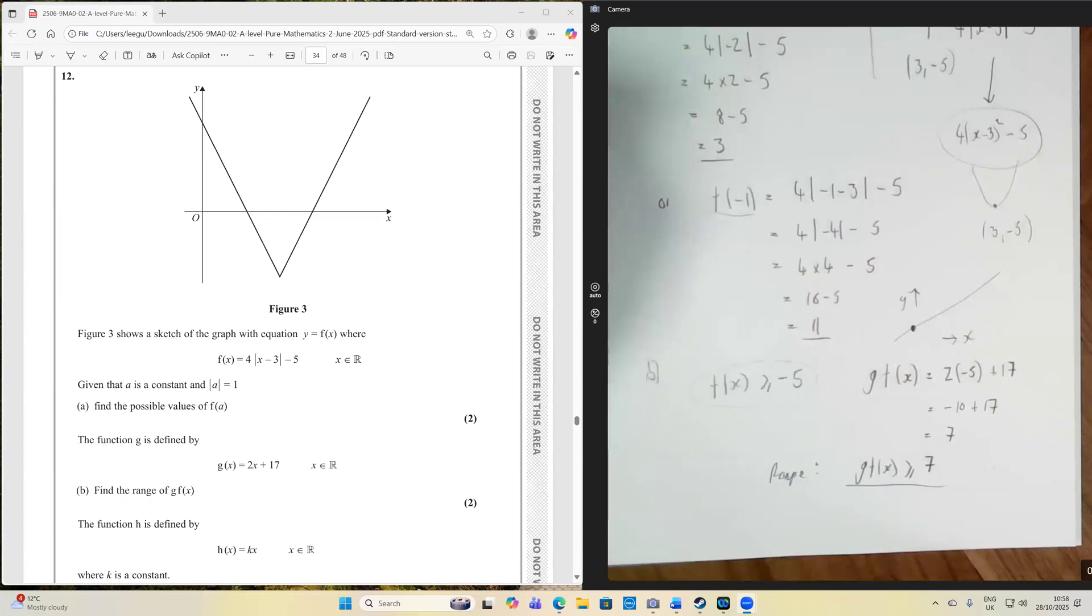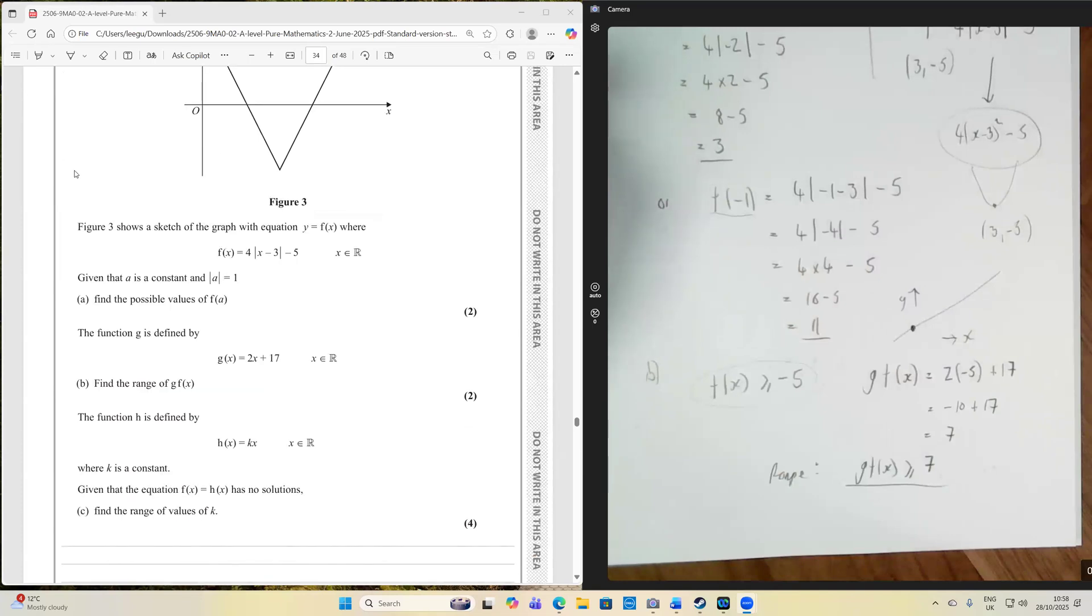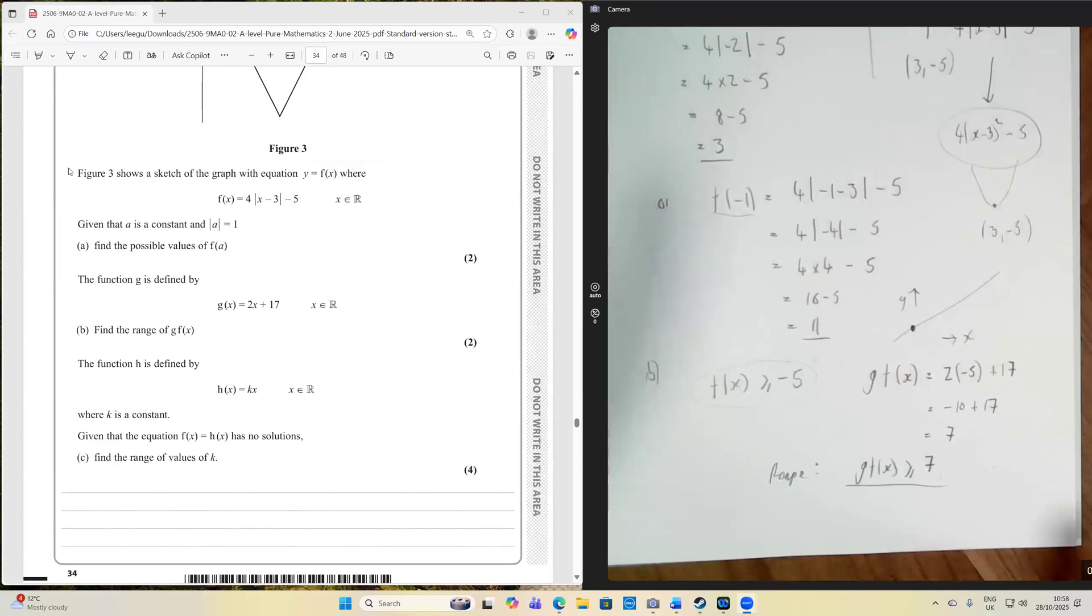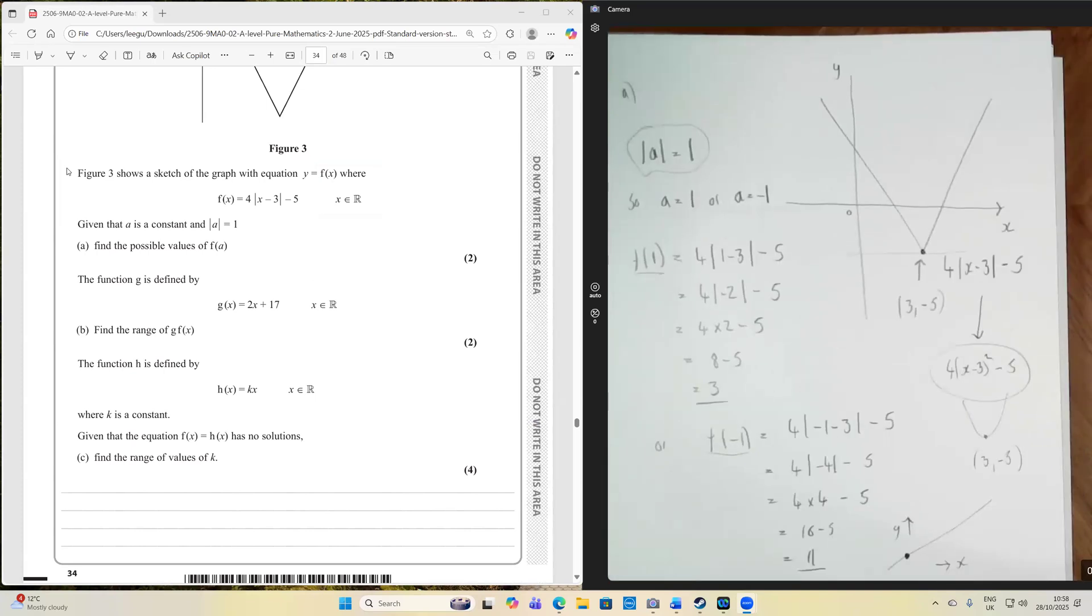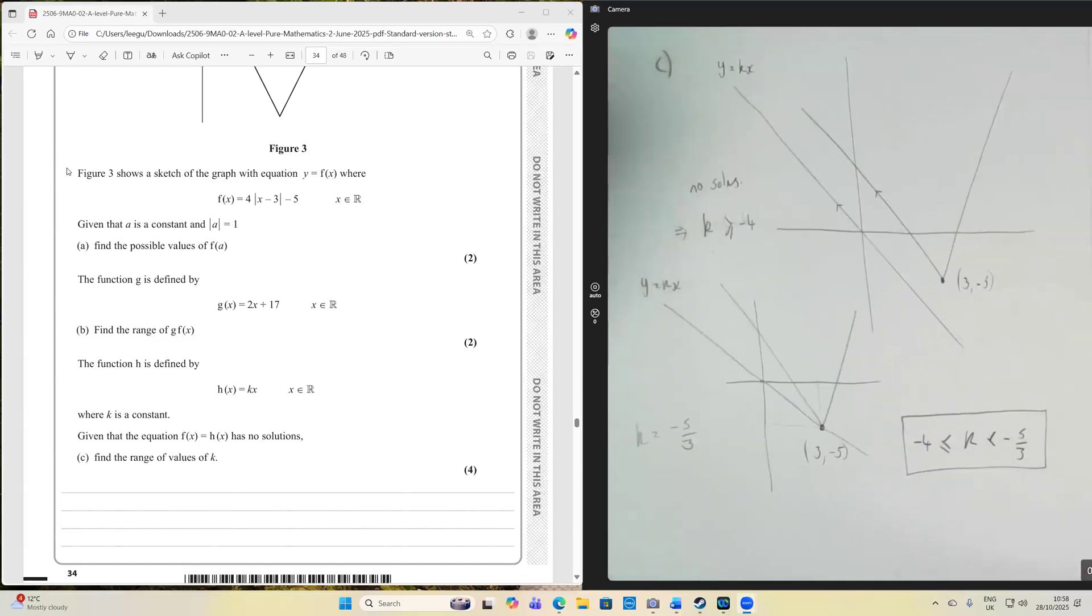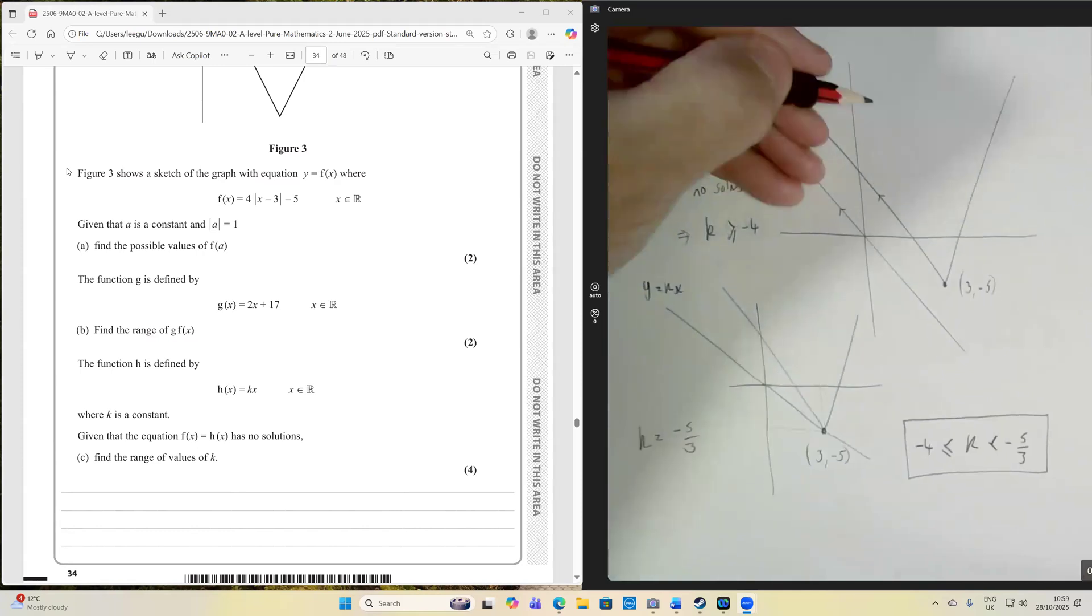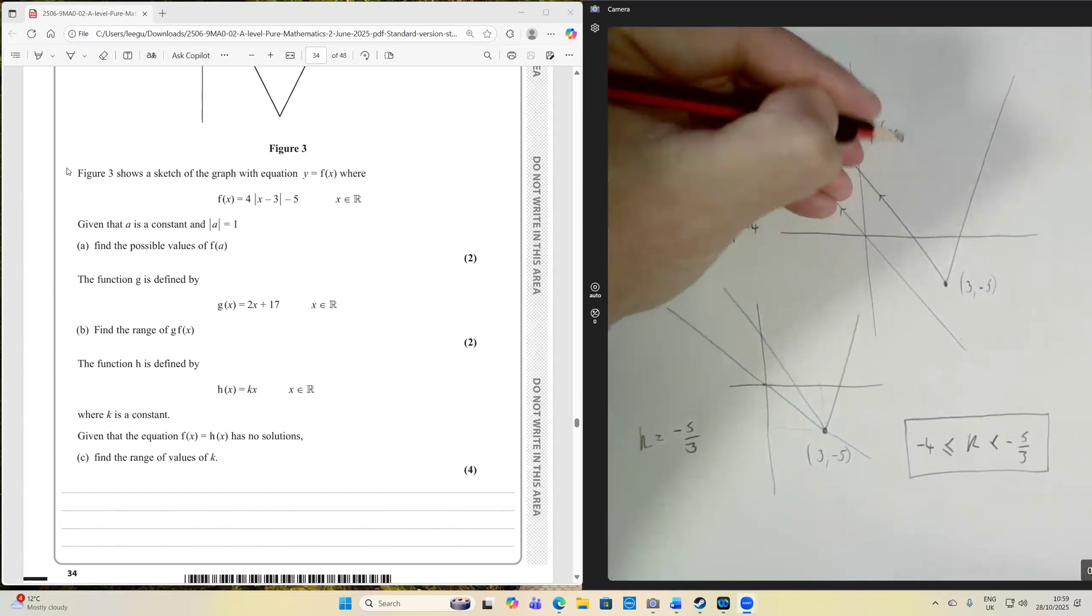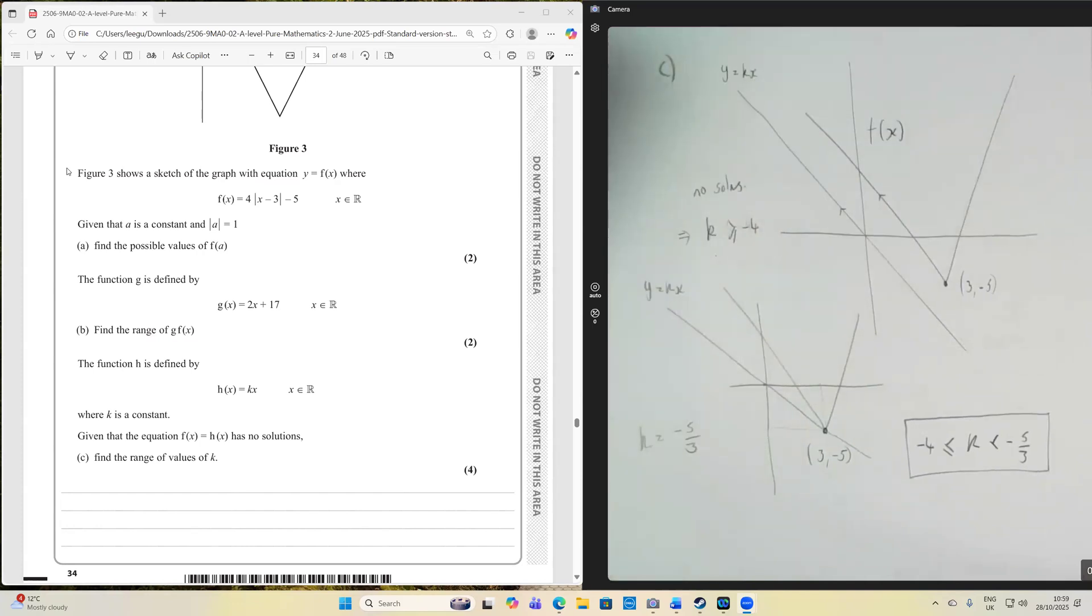Okay, the last bit of the question, and this is worth four marks. Yeah, and it's a really popular bit. So it says the function h is defined by h of x is equal to k times x, where x is a real number. Given that the equation f of x is equal to h of x has no solutions, find the range of values of k. Now, I've seen this come up so many times, it's really popular. They really like this in the exam board, because they know that people really get confused about what's going on here.